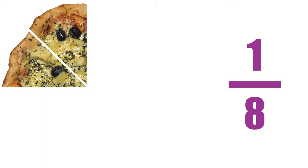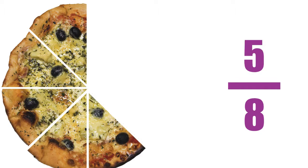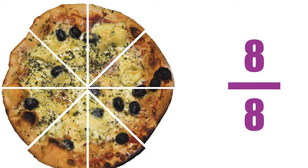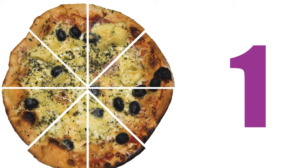If you took another slice, then you would now have two eighths, because you now have two of the eight slices that make up that whole pizza. And you can keep going like this right up until you have all eight pieces, or one whole pizza. And maybe heartburn.